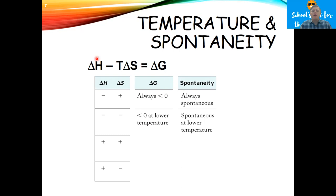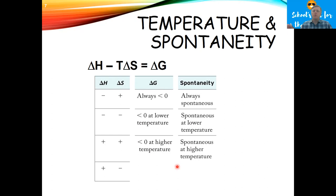What if delta H and delta S are both positive? Delta H being positive isn't favorable, but increasing disorder is. A positive minus a positive is negative only when the second value is bigger than the first — meaning when temperature is really high. So this is spontaneous only at higher temperatures, when T delta S exceeds delta H. Finally, if delta H is positive and delta S is negative — endothermic and decreasing disorder — that's a positive plus a positive, always giving a positive delta G. This reaction is never spontaneous.